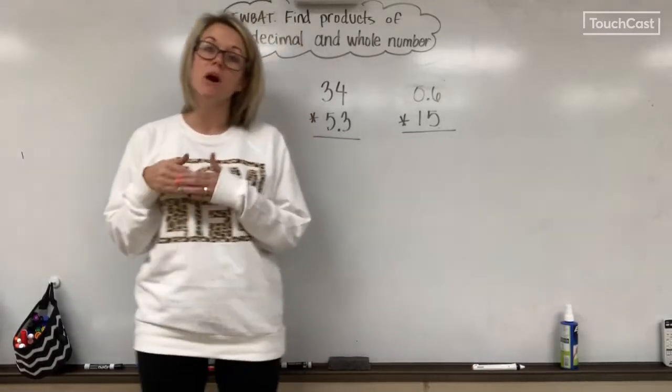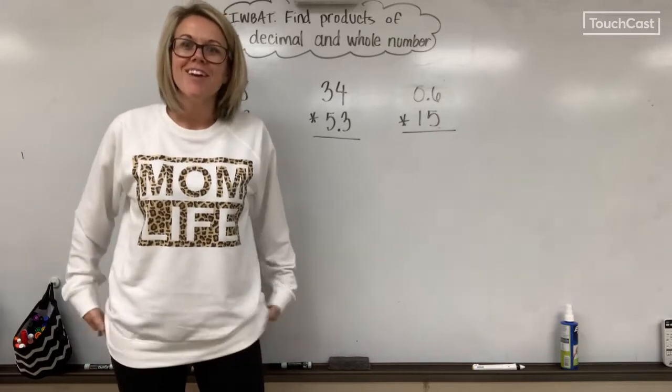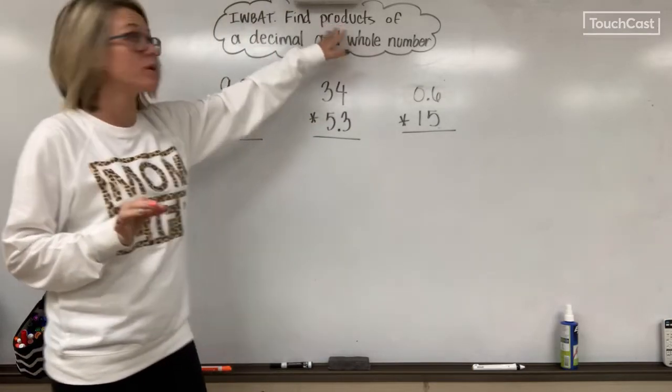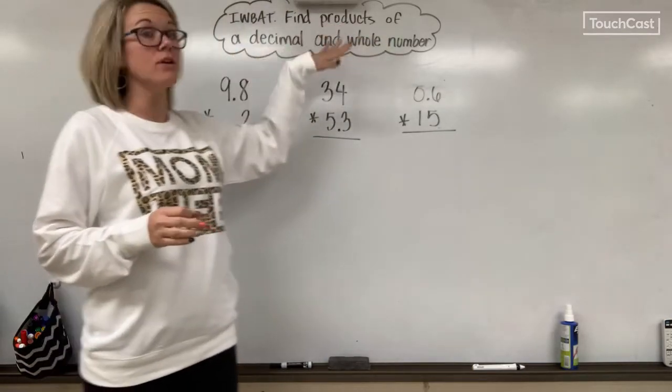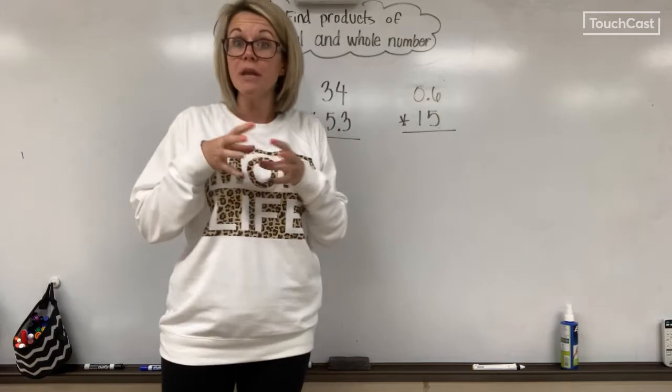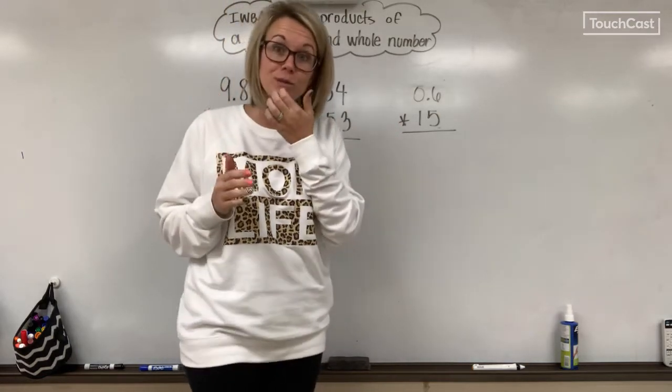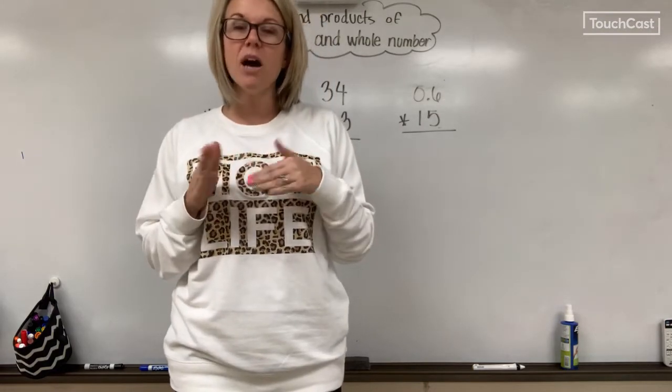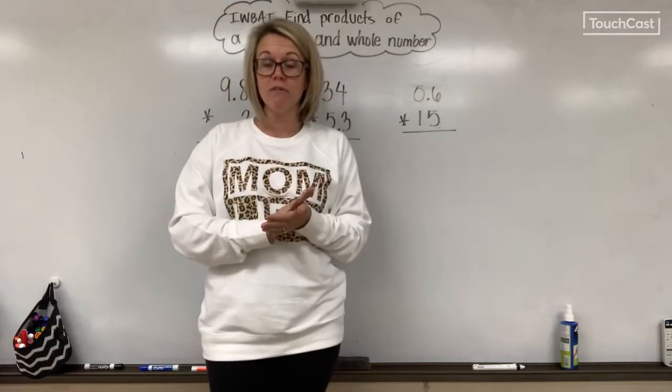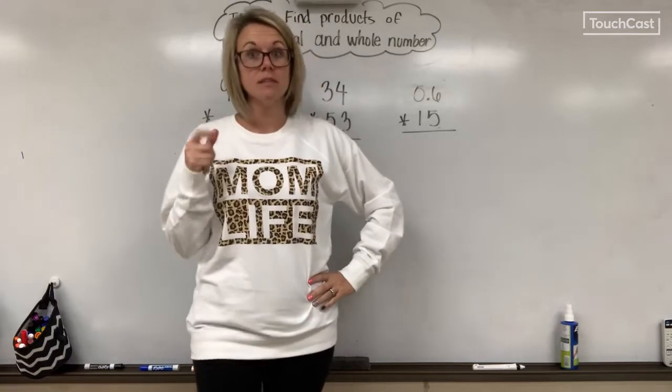Alright, today we are continuing with multiplying decimals. Tuesday, we talked about multiplying a decimal and a whole number, finding the products of a decimal and a whole number. A decimal being a number less than one, a whole number being one or greater. We're still multiplying decimals and whole numbers. The only difference is on Tuesday we used models, the hundredths grids to help us see why our answer was our answer. Today, we're not doing that. We're just going straight to it, using the strategies we talked about on Tuesday to help us solve these. Let's go ahead and get started.